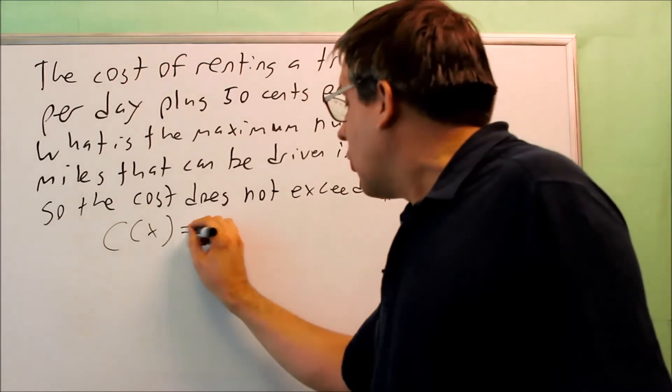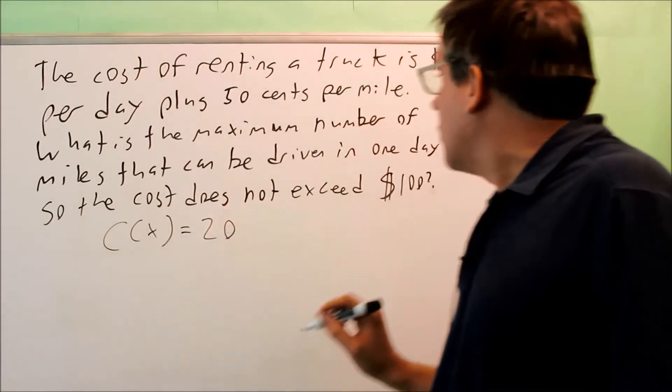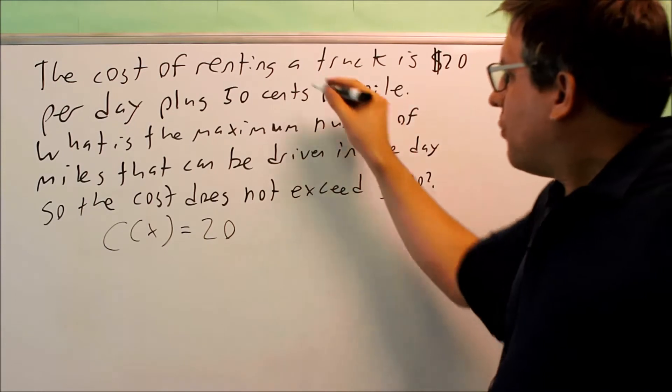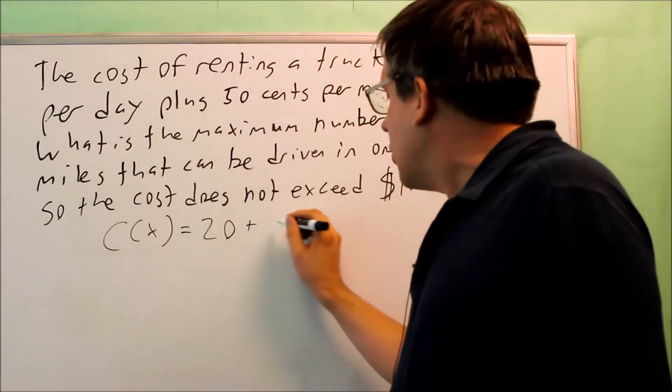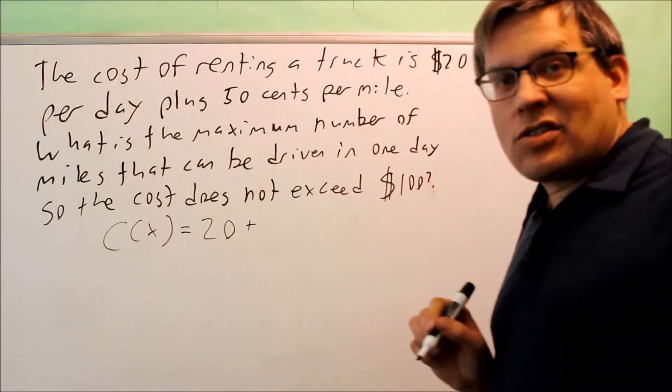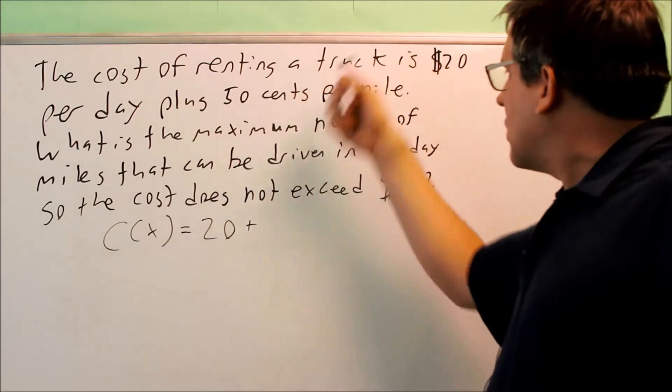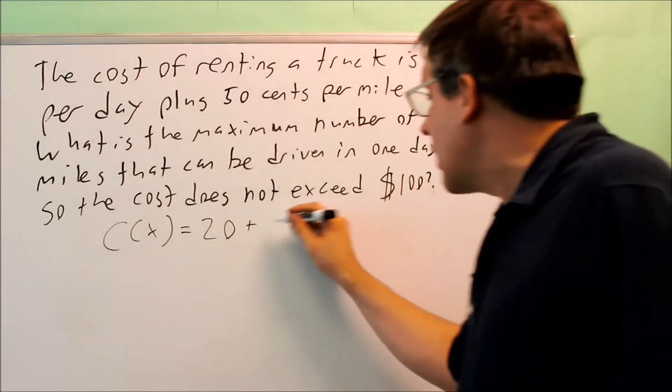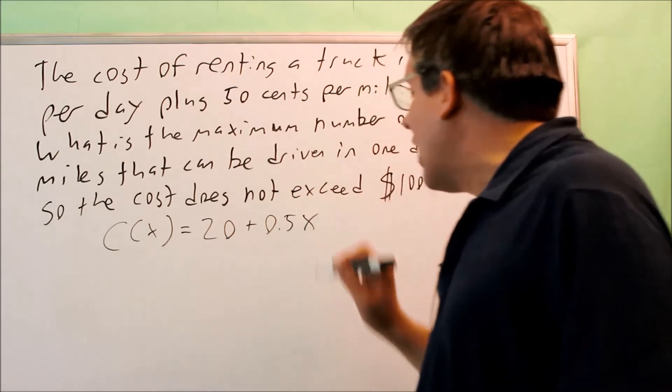C of X is going to equal my fixed cost, which is $20, plus 50 cents per mile. So make sure you don't put 50X there because you want to make sure we're using the same units. We want to make sure we're using dollars for all that, so you're going to do 0.5X.